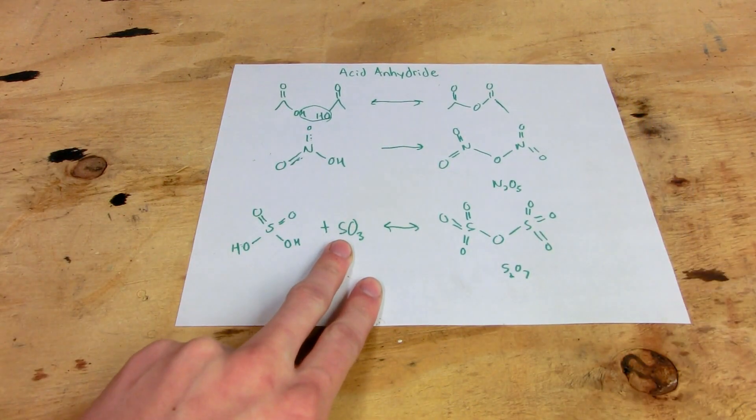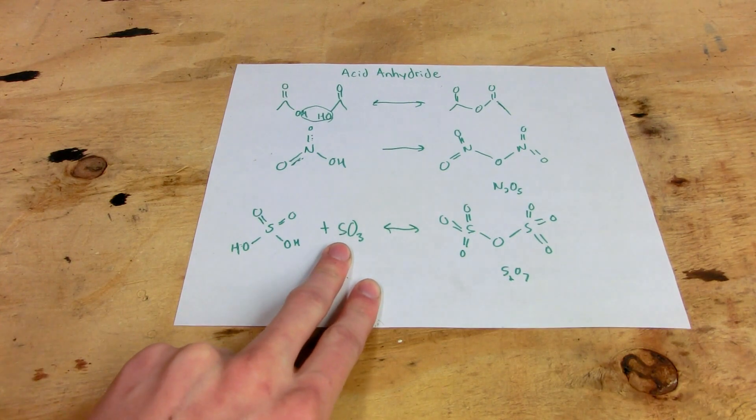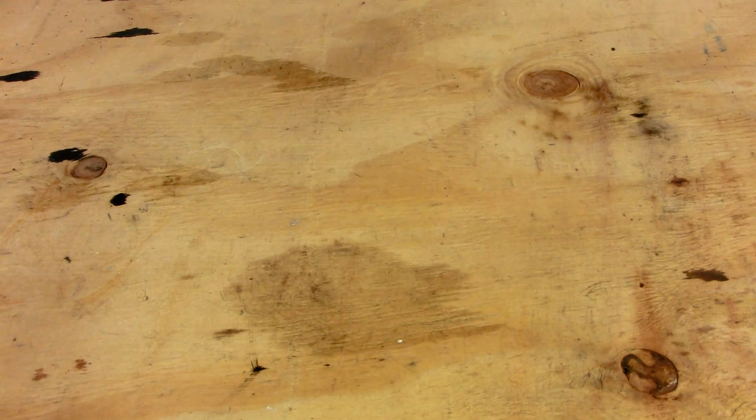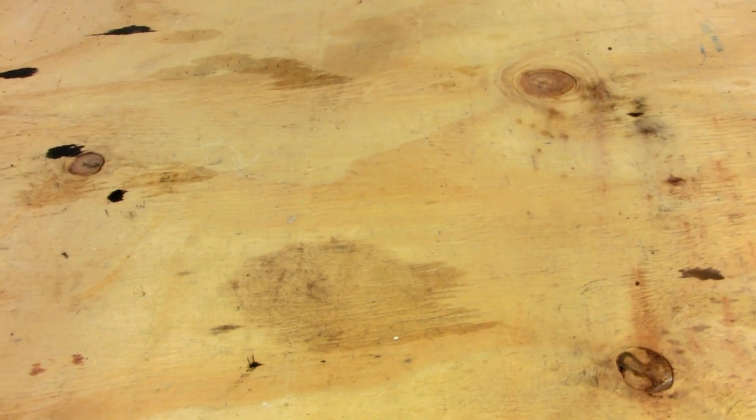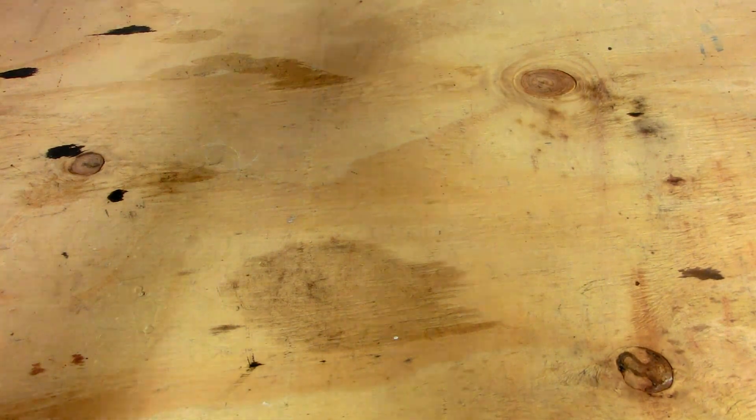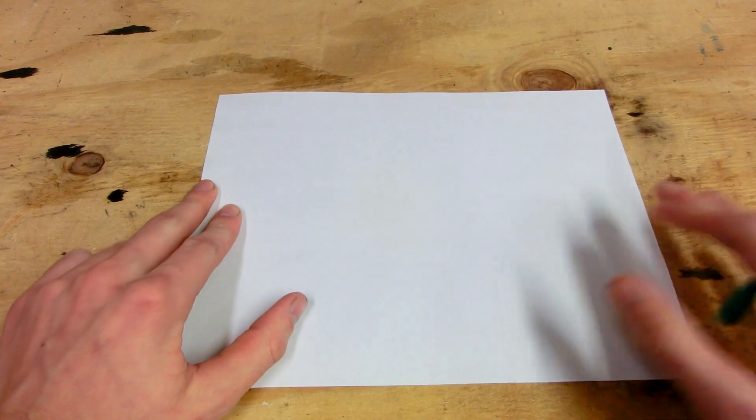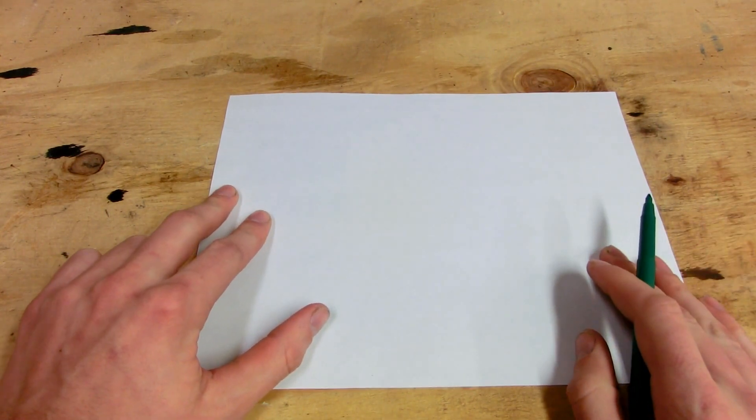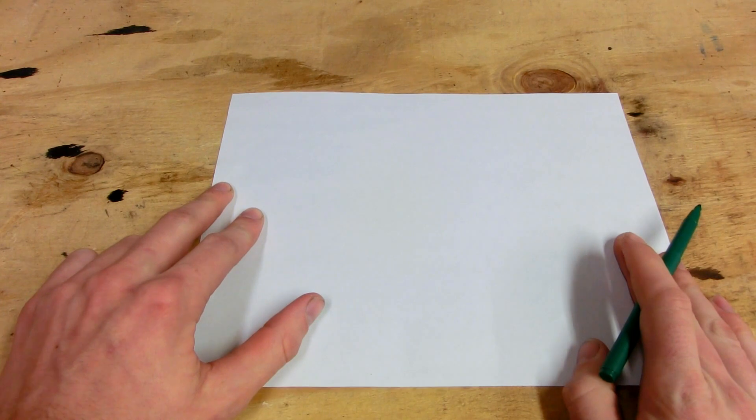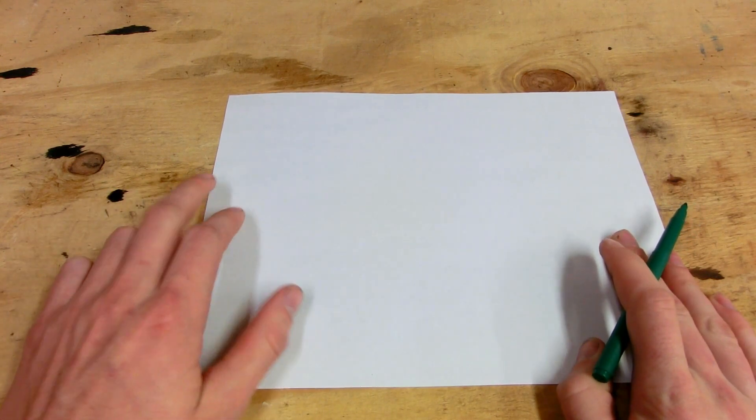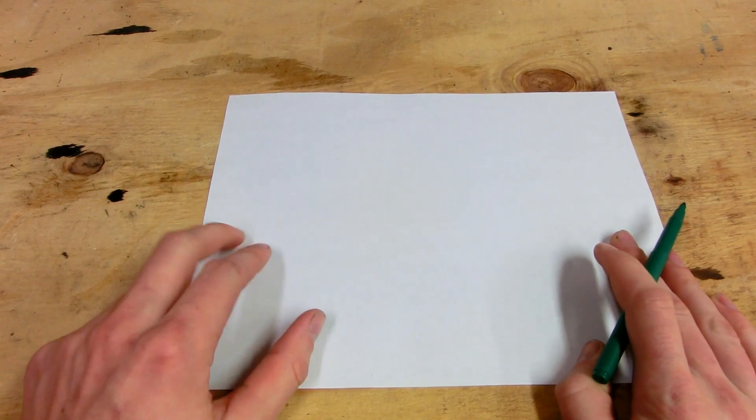But anyway, we're going to be making a very special anhydride today that a lot of people on YouTube like to make. Now let me get another piece of paper. What we are going to do is first make an acid, and then make its anhydride. The acid we're going to make is very special, and actually is very unstable, and doesn't exist except in very, very tiny quantities.